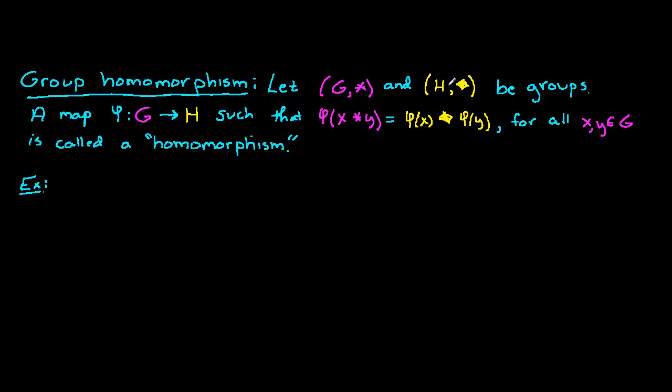We've got two different groups here. A map φ: G → H such that φ(x*y) = φ(x)◇φ(y) for all x,y ∈ G is called a homomorphism. So φ is a homomorphism if it satisfies this property.